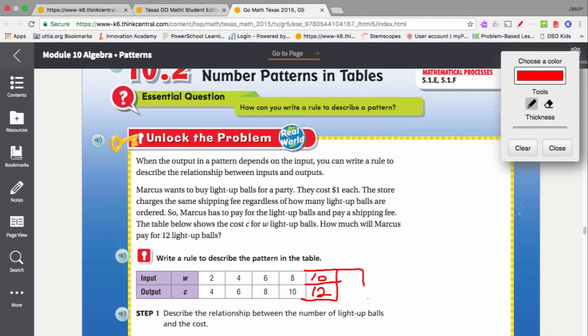And then if we continue it one more time, that would get us our answer. If he orders 12 balls, that would be 14 because we're just continuing the pattern 4, 6, 8, 10, 12, 14.